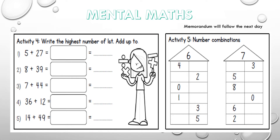Today's mental math, you have two activities. Activity 4, write the highest number, or first add up to. Activity 5 is number combinations. That's just a few sums that you have to do — it will not take you that long.